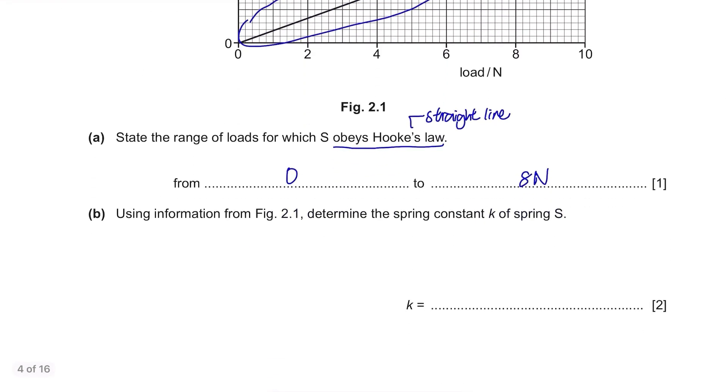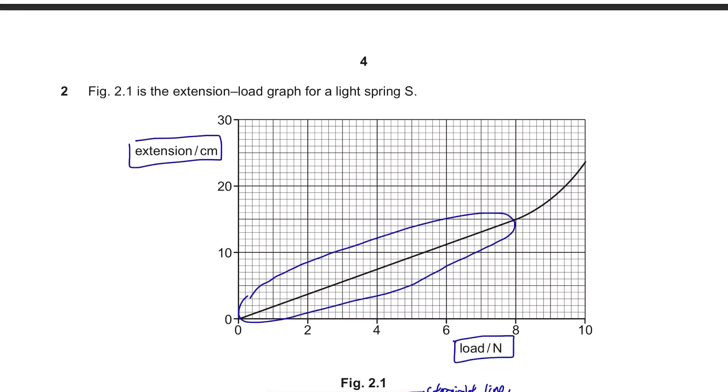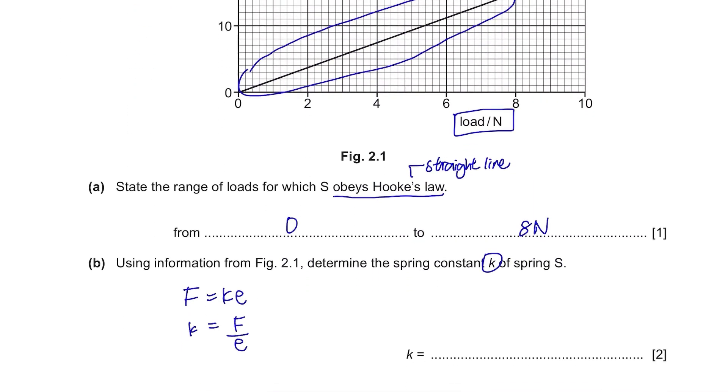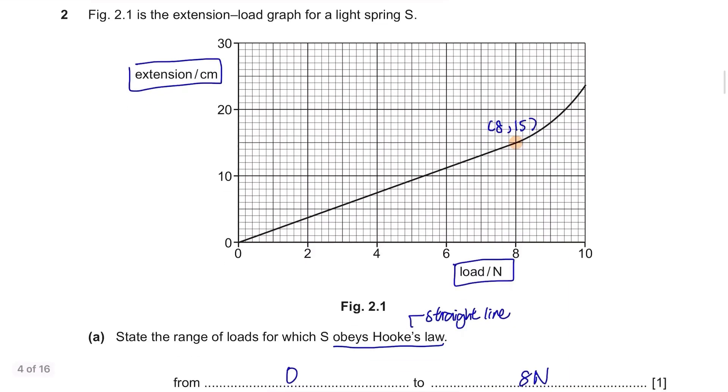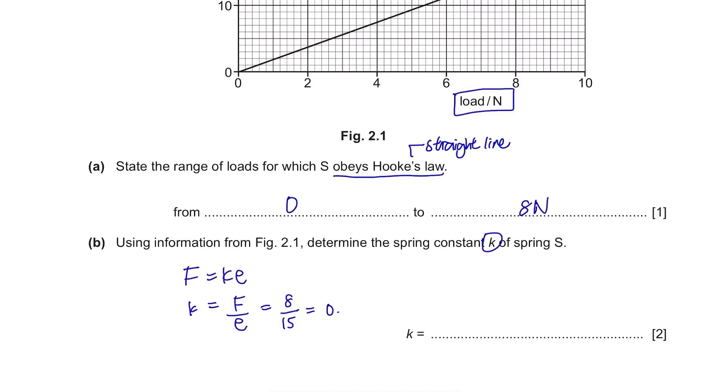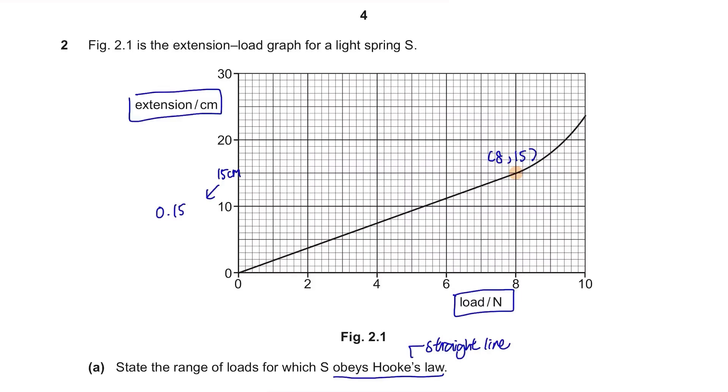Part B. Using information from Figure 2.1, determine the spring constant K of spring S. There is a formula that connects the spring constant K, extension and load and it's F equals Ke. F is the force in newtons so it's basically the load and E stands for the extension. We need to find K and K is force divided by extension so take one point from the straight part of the graph. I'll take this point which is 8, 15. 8 divided by 15 is 0.53 and the unit is newtons per cm according to the graph. You can also convert centimeters into metres since metres is the SI unit of length and put your answer as 53 N per metre. It's up to you, both are correct.